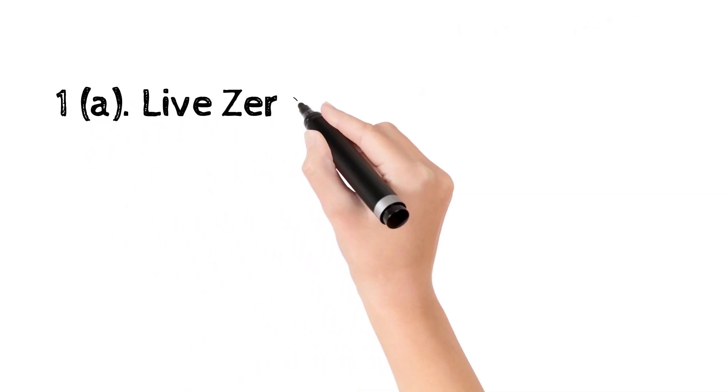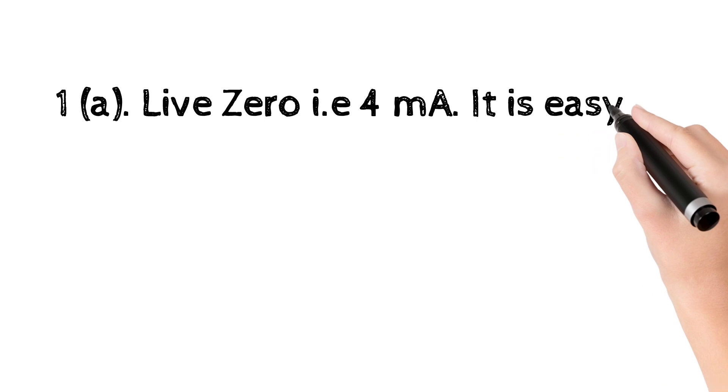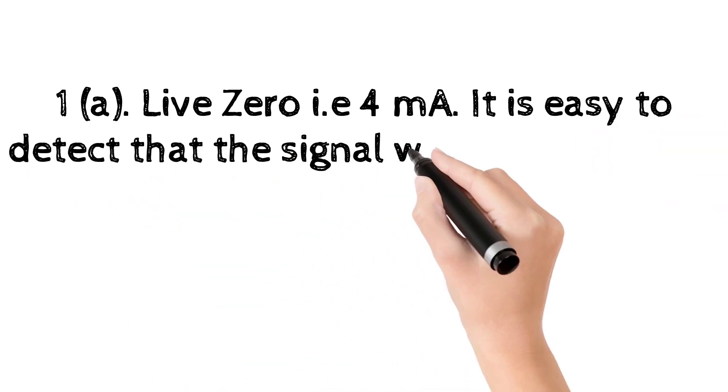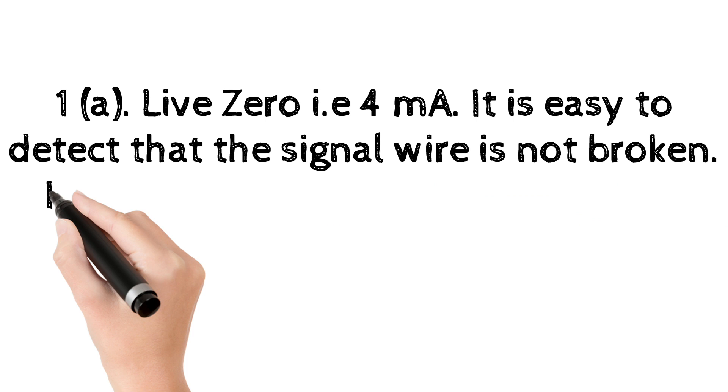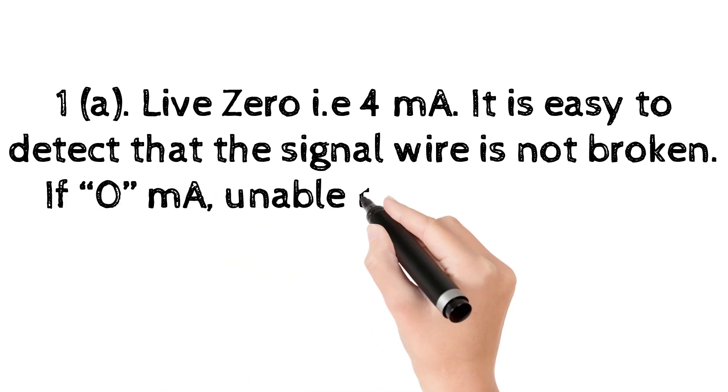1A. Live 0, i.e. 4 mA. It is easy to detect that the signal wire is not broken. If 0 mA, unable to know that it is a signal or wire broken.